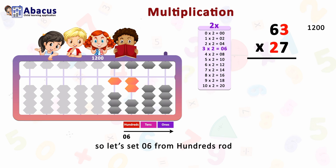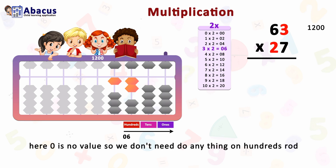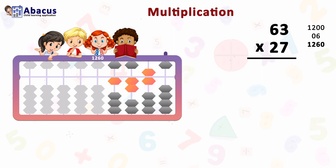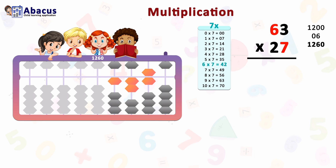Let's set 06 starting from the hundreds rod. Zero has no value, so we don't need to do anything on the hundreds rod. For 6, on the tens rod, move one bead to the top from the bottom and move the top bead downward. Now we have 1260.